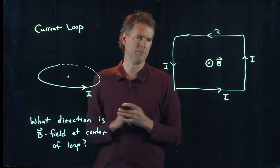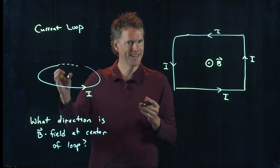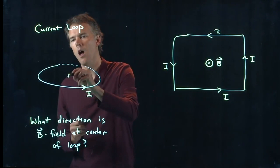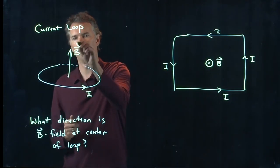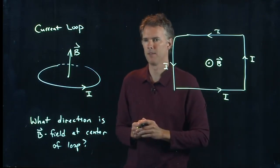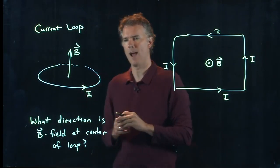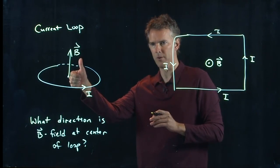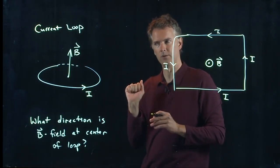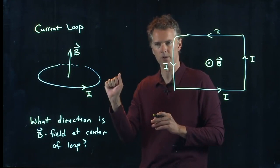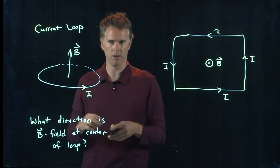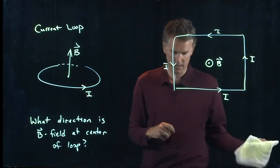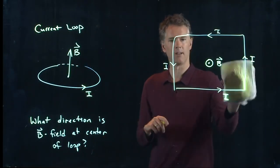So let's go back to this problem. What's the correct answer here? Well, it is up. If you wrap your fingers around in the direction of the current, then your thumb becomes the direction of B, which is equivalent to putting your thumb in the direction of the current and wrapping your fingers around in the direction of B. It's all symmetric. So that is the correct answer and the two of you that guessed that, nice job.